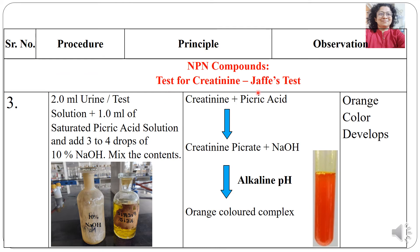The next test is for creatinine, known as the Jaffe test. Take 2 ml of urine, add 1 ml of saturated picric acid solution and 10% NaOH. The reaction takes place in alkaline pH — creatinine plus picric acid forms creatinine picrate in alkaline medium, which is an orange-colored complex, turning the solution orange.